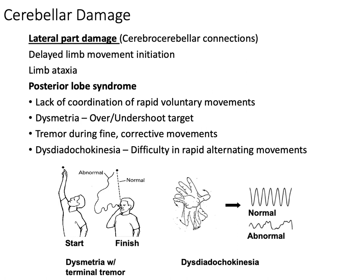Lastly, we have tremor during fine corrective movements — this is a terminal tremor. At rest they are fine, there's no shaking, but once they make movements such as pointing at something, their finger starts shaking. Don't confuse this with resting tremor, which is present in Parkinson's disease where the person shakes even at rest. If it's cerebellar damage, it's a terminal tremor. If it's a resting tremor, there's a problem with the basal ganglia. The type of tremor tells you where the damage has taken place.